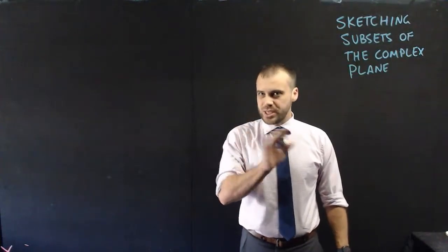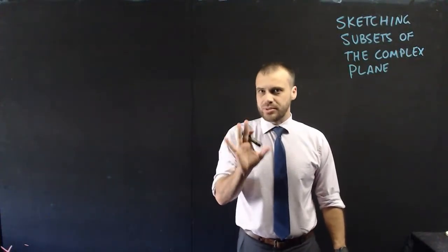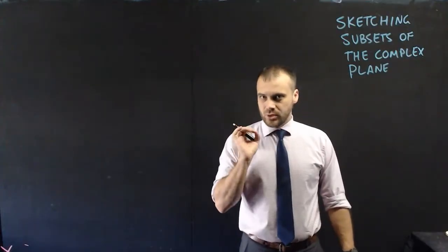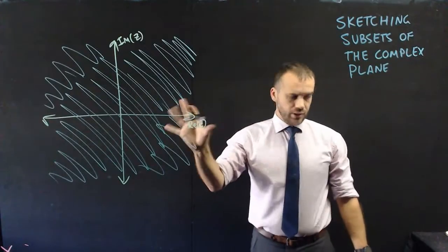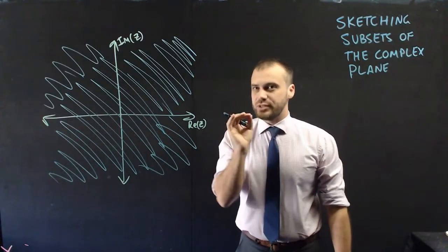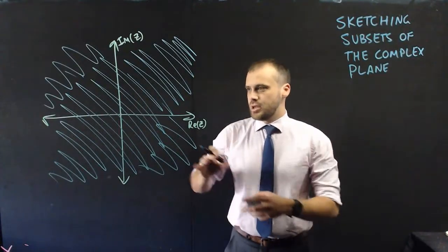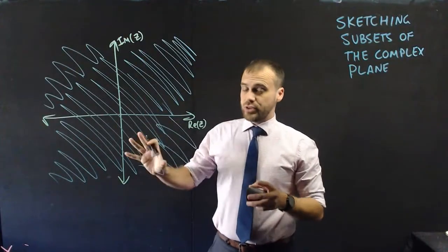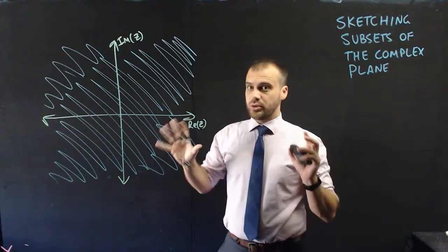What if I told you to show me every single complex number that exists? How would you represent that? Here's how I'd represent it — just like this. What you're looking at is a sketch of the set of complex numbers. We're on an Argand diagram, and we shade in everything to represent all of the complex numbers.